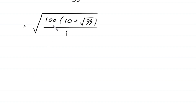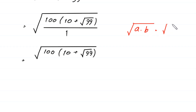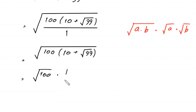Now this expression is equal to 100 times (10 plus square root of 99). By using the property that square root of a times b equals square root of a times square root of b, this square root of 100 times (10 plus square root of 99) becomes square root of 100 times square root of (10 plus square root of 99).